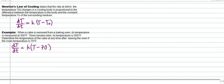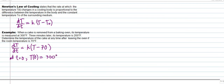Based on our problem, at t equals zero the initial temperature is T(0) equals 300 degrees Fahrenheit. Then, three minutes later, at t equals 3, the temperature T(3) equals 200 degrees Fahrenheit. These are our two initial conditions.